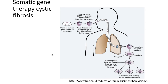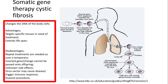There are some advantages and disadvantages here that we need to know about. First of all, it targets specific tissues in need of treatment, which is fantastic — in this case we're just targeting the lungs, but in other cases you might be targeting the pancreas or whatever particular tissue you want to impact on. It will also extend the lifespan of the individual because they're no longer impacted by cystic fibrosis, at least on a temporary basis.